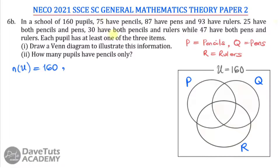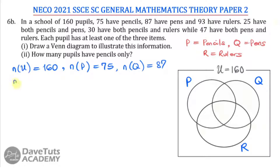We are told that 75 have pencils, so the number of those with pencils is 75. The number of those with paints, which we are denoting as Q, is 87. Then the number of pupils having rulers is given as 93.